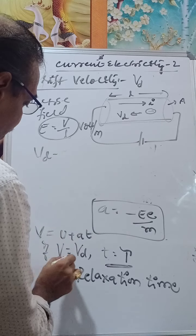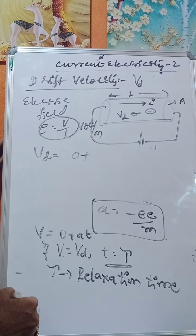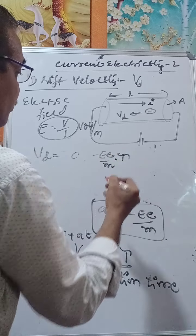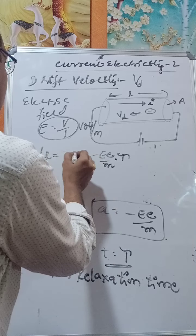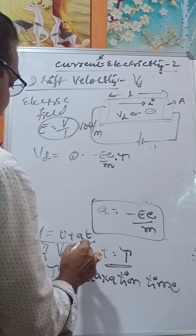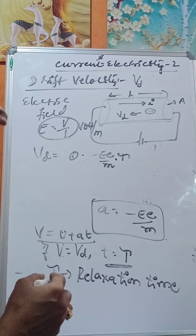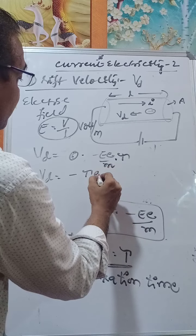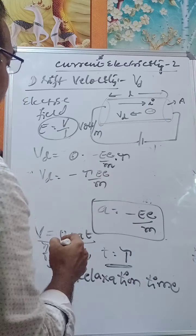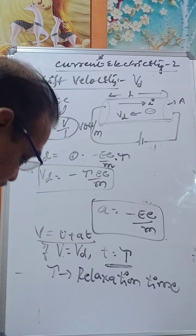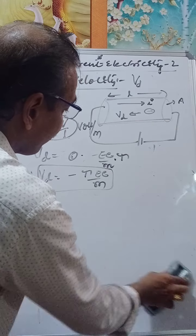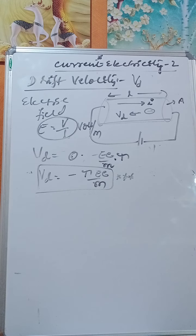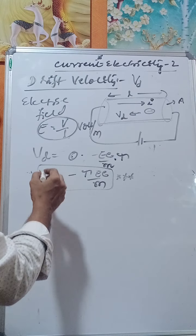Substituting into v = u + at: Vd = 0 + (−eE/m)·τ. The initial velocity is taken as zero. Therefore, drift velocity Vd = −τeE/m. This is a very very important equation for drift velocity.